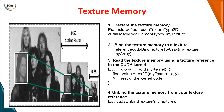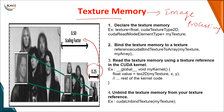Moving on to the next type, which is texture memory. Texture memory is generally used for image processing applications. For example, when scaling an image, as you increase the scaling factor, the size of the image increases. Internally, your image is stored in the form of pixels, and you want to perform the scaling operation on simultaneous pixels. For that, we go for texture memory. To use texture memory, you first have to declare it, and when declaring, it takes three parameters.